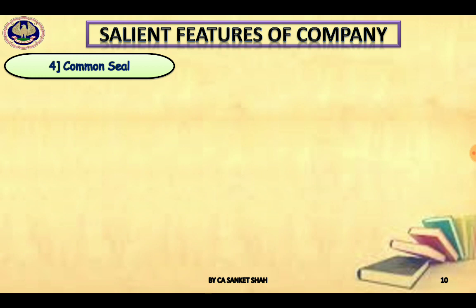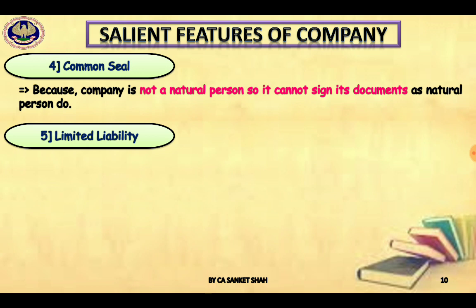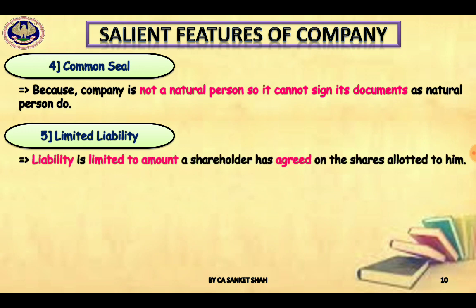Common seal — because a company is not a natural person, it cannot sign documents. Therefore you need a common seal and an authorized signatory for the company. Limited liability means liability is limited to the amount a shareholder has agreed on the shares allotted to him. There is no liability if shares are fully paid. Limited liability is restricted to the face value of shares allotted to the shareholder.